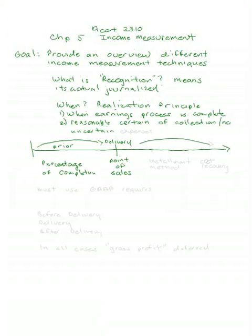There are some methods that also take place after the point of delivery. One is called the installment method, and it's another measurement technique, usually used with long-term revenue collections. And then another one is cost recovery.